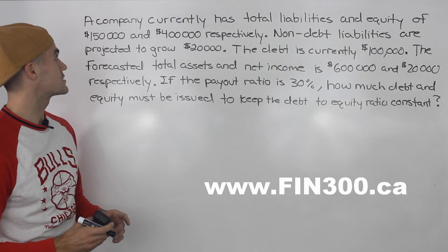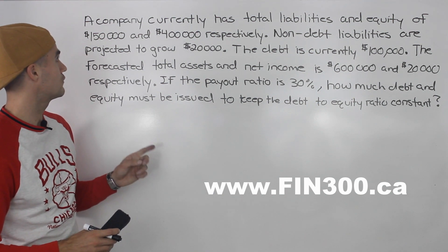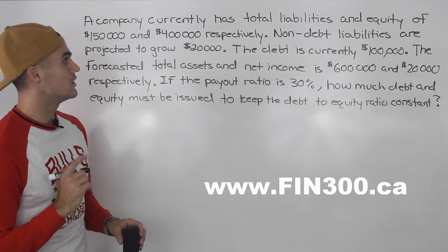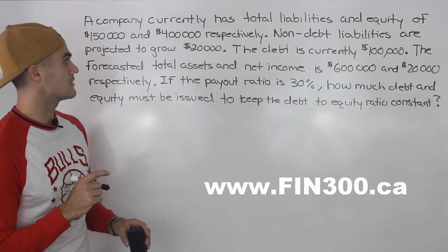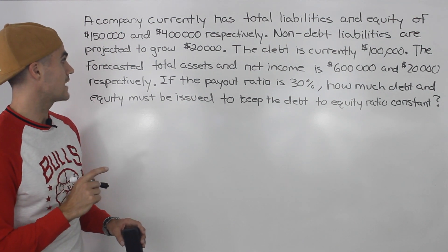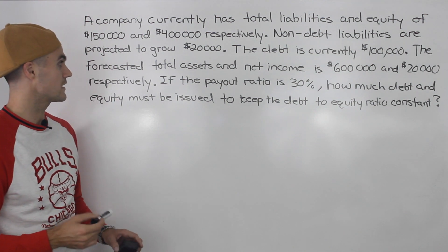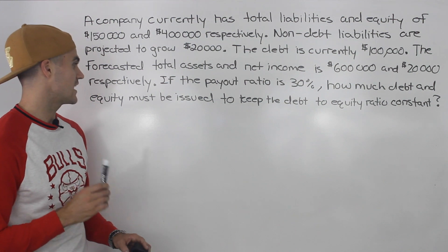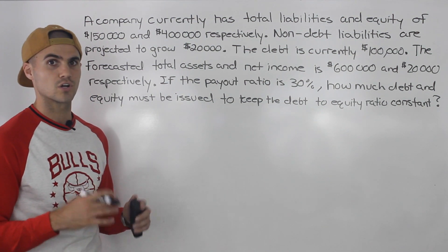So let's read it. A company currently has total liabilities and equity of $150,000 and $400,000 respectively. Non-debt liabilities are projected to grow by $20,000. The debt is currently $100,000. The forecasted total assets and net income is $600,000 and $20,000 respectively. If the payout ratio is 30%, how much debt and equity must be issued to keep the debt to equity ratio constant?